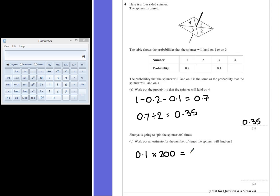We get an estimate for the number of times it will actually land on the number 3. And the answer for this one is 20. So we think about 20 times the spinner will land on 3.